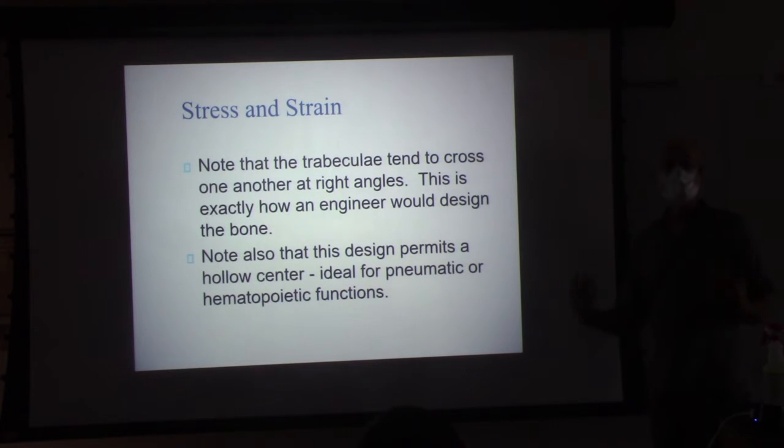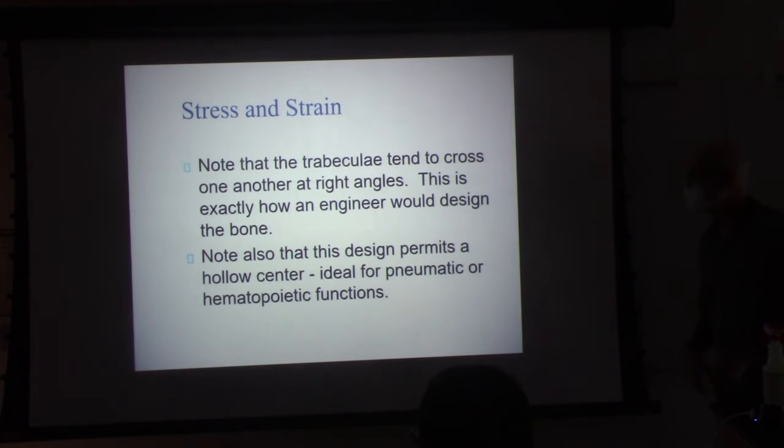All right, so back to stress and strain. Note that those trabeculae are crossing each other at these 90-degree angles. So what you've set up in the long bones at any rate is a structure that's ideally suited to tolerate strain, and at the same time has a lot of open area where you can produce blood.